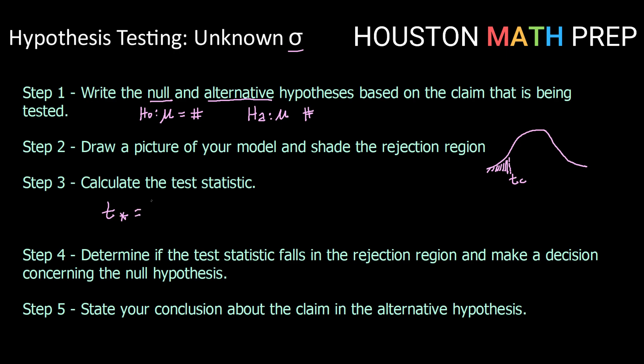So this time that is going to be calculated by taking x bar minus mu divided by, this time we're going to use s or our sample standard deviation divided by the square root of the number in our sample.